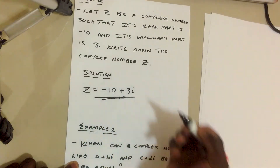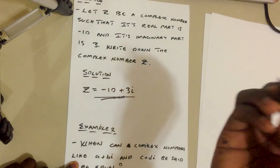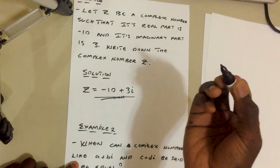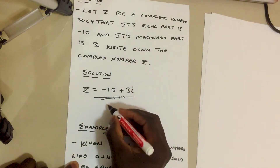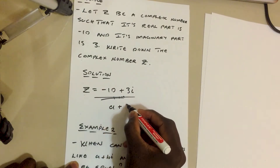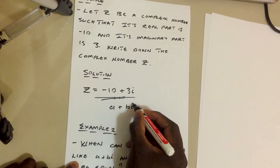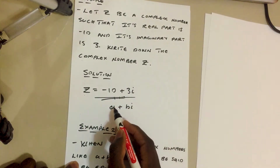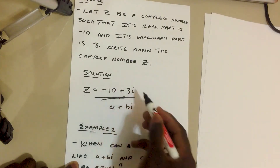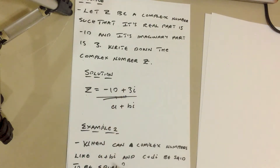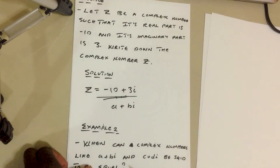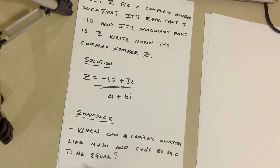So our complex number is z equals negative 10 plus 3i. By definition, a complex number is any number of the form a plus bi, and this is simply that — so we've answered the question.